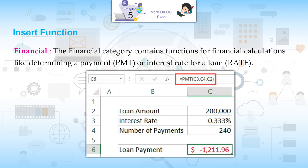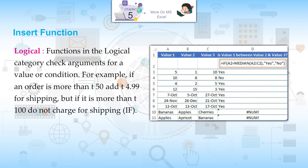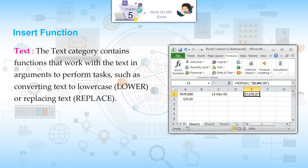Financial: contains functions for financial calculations like determining a payment (PMT) or interest rate for a loan (RATE). Logical: Functions in the logical category check arguments for a value or condition. For example, if an order is more than Rs.50, add Rs.4.99 for shipping, but if it is more than Rs.100, do not charge for shipping — using IF or OR functions.